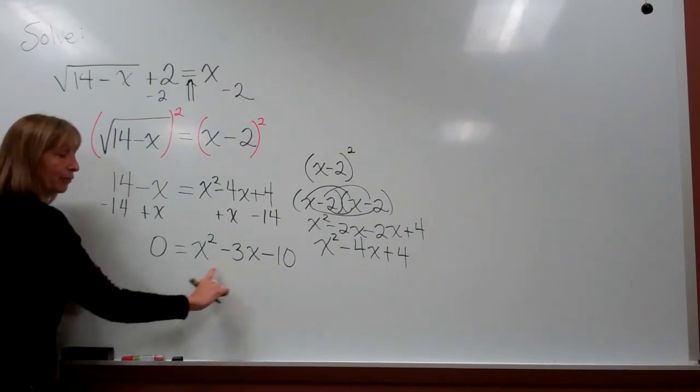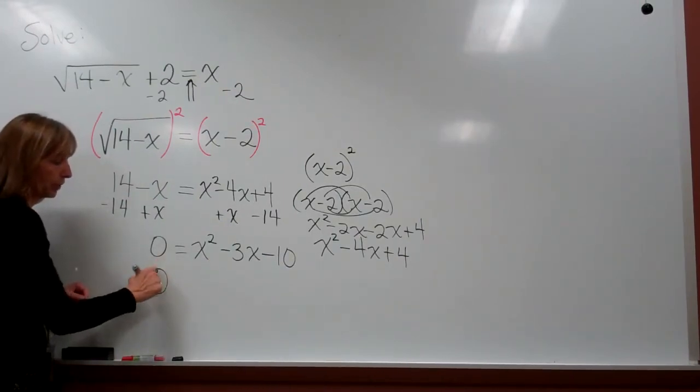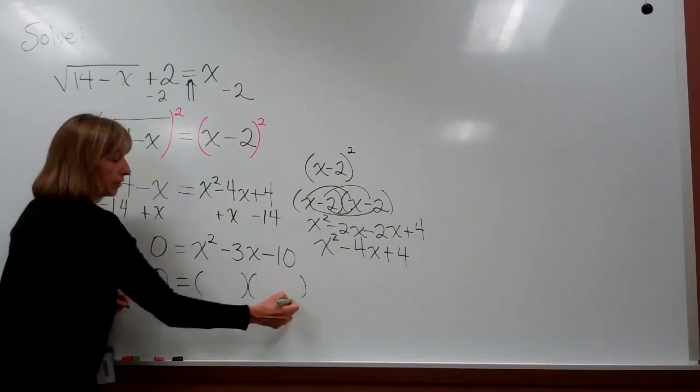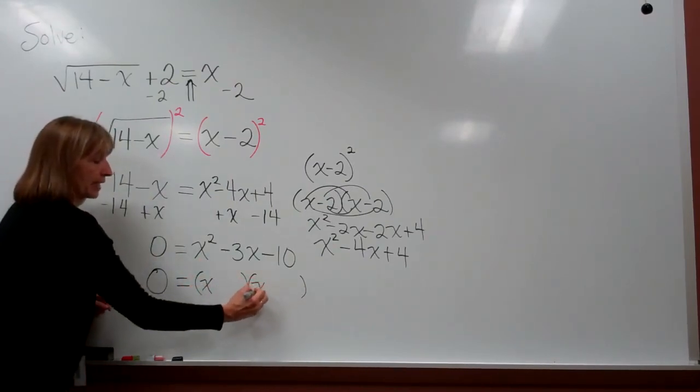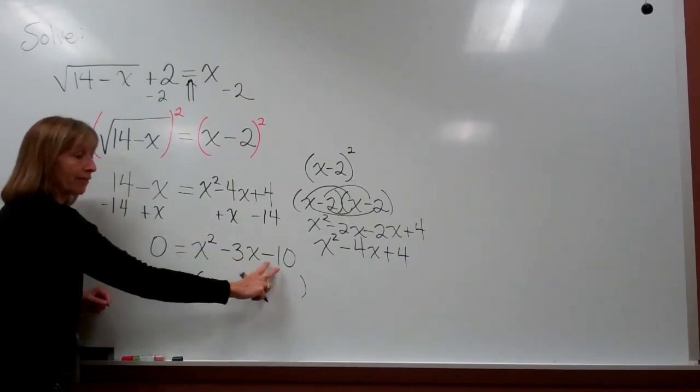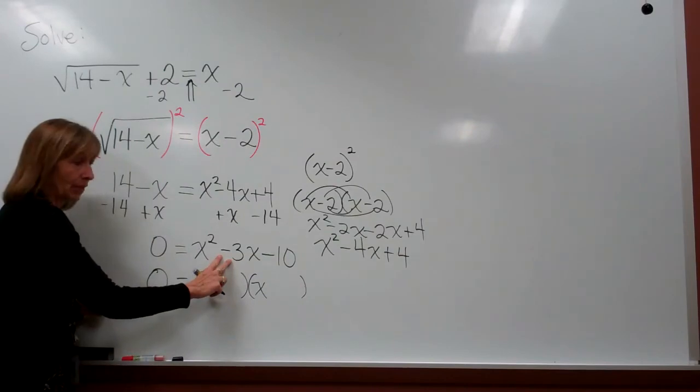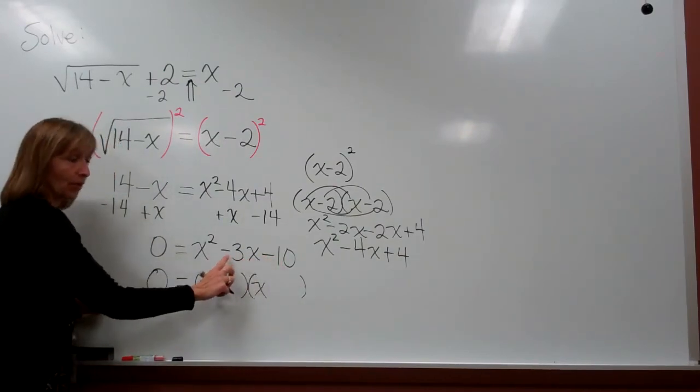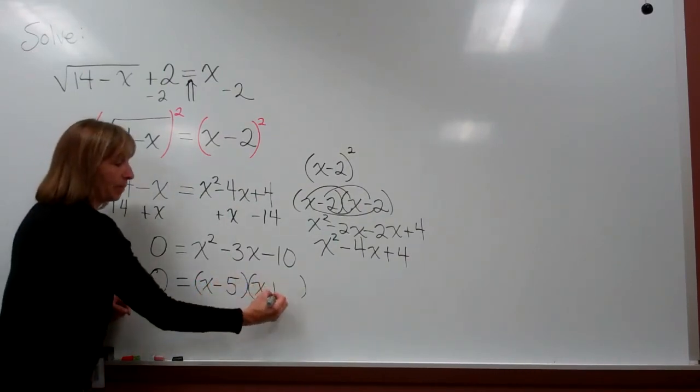We want to see if we can factor x squared minus 3x minus 10. We'll set up our two binomials. In our first terms of our binomials, we need an x, so that we get x times x, which would be x squared. And then we want the factors of negative 10 that would add to get negative 3. So, the numbers who multiply together and give me negative 10, but also add together and give me negative 3, are negative 5 and positive 2.